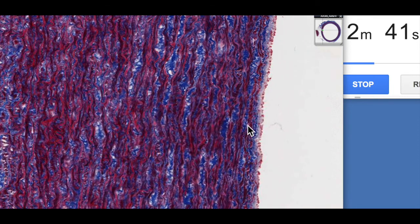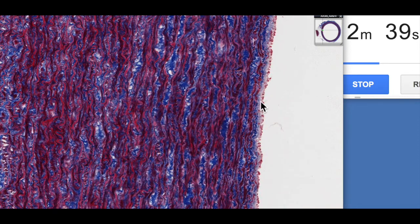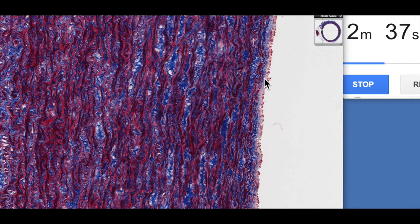We've got this really nice tunica intima of the simple squamous endothelial lining, a little layer of loose connective tissue and then we've got all of these bands of elastic lamina.